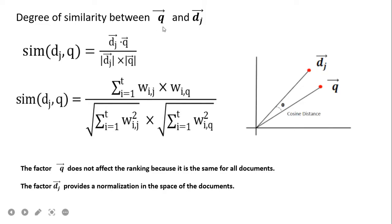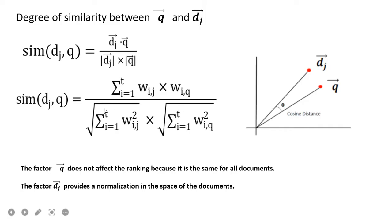The degree of similarity between query vector q and document vector d_j is computed using the cosine formula. The similarity is the cosine of the angle between the two vectors — when they are very similar the angle is zero, and as they diverge the angle increases. In the numerator we take the element-wise multiplication and sum; in the denominator we take the norms of each vector. Since the query vector q is the same across all documents, it does not affect ranking; the document vector d_j provides normalization in document space.